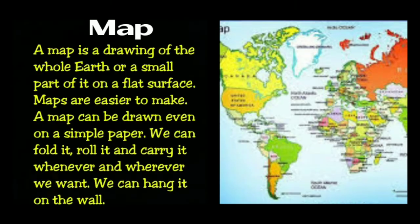A map is a drawing of the whole Earth or a small part of it on a flat surface. Maps are easier to make — a map can be drawn even on a simple paper. We can fold it, roll it, and carry it whenever and wherever we want. We can also hang it on the wall.